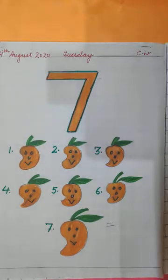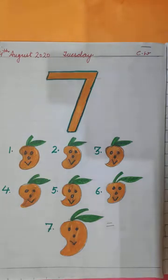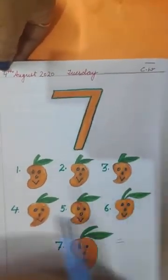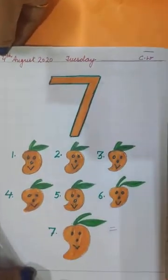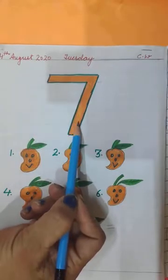Ok children, get ready with your notebooks, pencil and eraser. Now I am going to start how to write 7. I have already written 7. This is 7.